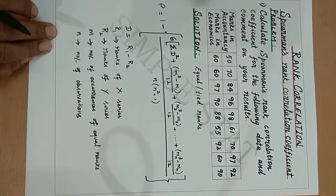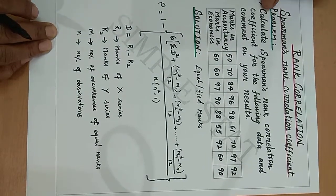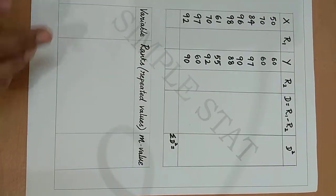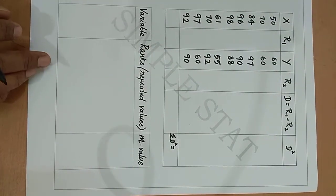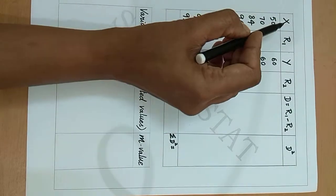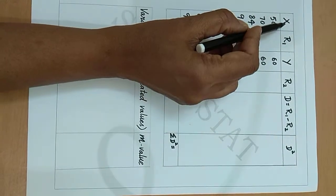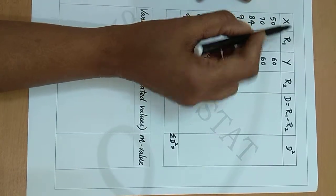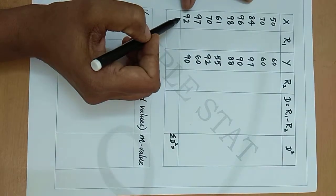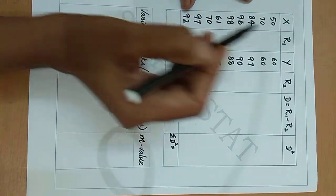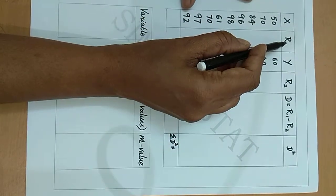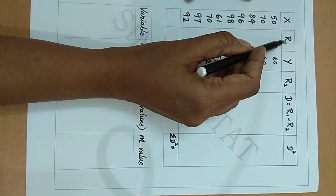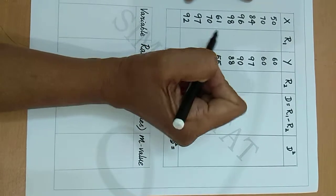Let's now proceed with the tabulation. Denoting the marks in accountancy by the variable X, write all its values. Then write the ranks of X denoted by R1. Let's now rank these values.